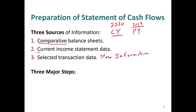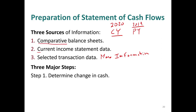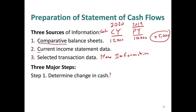There are three major steps to prepare the financial statement. The first step is to determine the change in cash — look at cash on the balance sheet, the current year and prior year. If current year cash is $15,000 and prior year is $10,000, cash increased by $5,000. The purpose of the cash flow statement is to explain this increase. Once you're done, you have to explain how that change occurred.